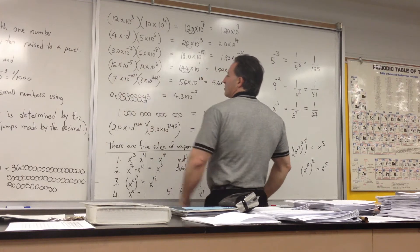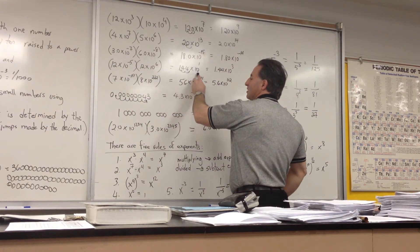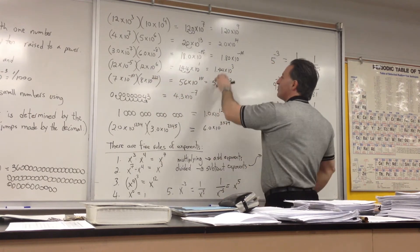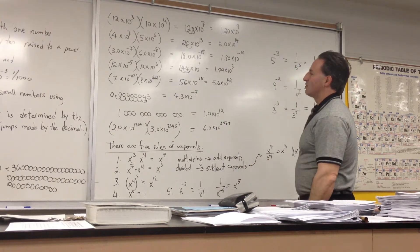12 times 10 to the minus 5 times 12 times 10 to the positive 6 gives you 144 times 10 to the positive 1. Minus 5 plus 6 gives you positive 1. We move the decimal over twice, so that gives us 1.44 times 10 to the 3.